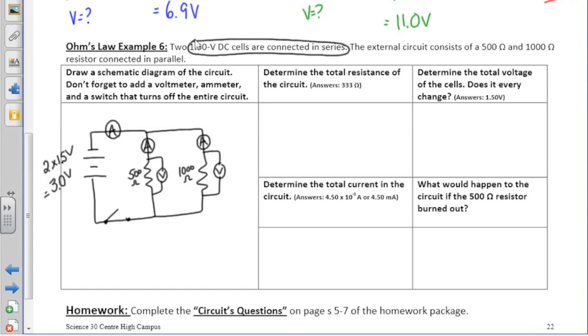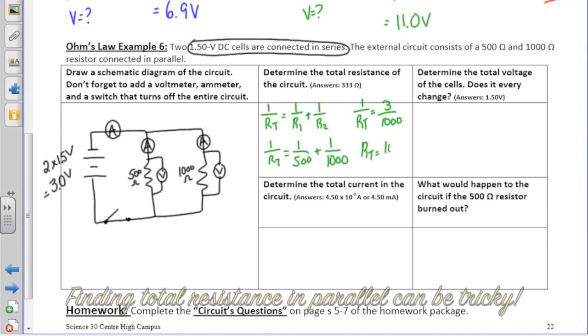The question then asks us to determine the total resistance of the circuit. Because this is a parallel circuit, we must use the formula 1 over total resistance equals 1 over R1 plus 1 over R2. If we punch that into our calculator, we will get that 1 over the total resistance is 3 over 1,000. Don't forget that this part can be tricky. In order to find the total resistance, we must take the reciprocal of 3 over 1,000, which simply means that you can flip the fraction.